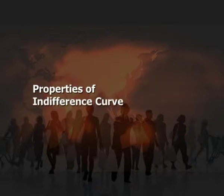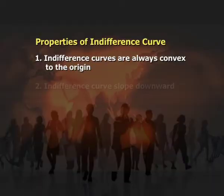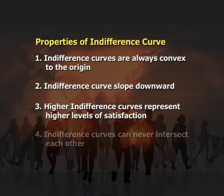Now we will discuss properties of indifference curves. First, indifference curves are always convex to the origin because of diminishing MRS, which declines continuously due to the law of diminishing marginal utility. Second, indifference curves slope downwards, implying that as a consumer consumes more of one good, he must consume less of the other. Third, a higher indifference curve represents a higher level of satisfaction. Fourth, indifference curves can never intersect each other, as two indifference curves do not represent the same level of satisfaction.